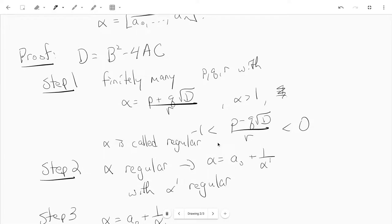Step two is to show that if alpha is regular, so it's a root of a quadratic polynomial with, we're fixing d throughout this proof, so we can write alpha as p plus q root d over r